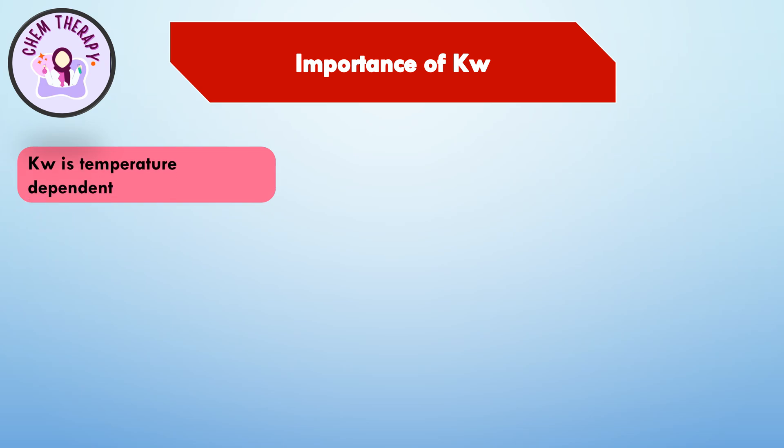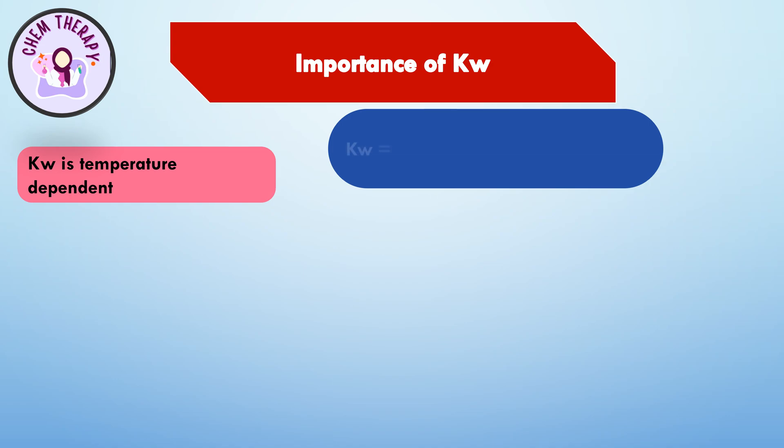Kw is temperature dependent. At 25°C, the value of Kw is constant at 1×10⁻¹⁴. This means if the concentration of hydrogen ions increases, the concentration of hydroxyl ions must decrease so that the value of Kw remains constant. This constant value of Kw at a particular temperature is important for determining the nature of a solution.